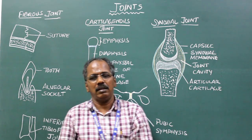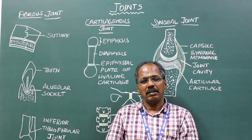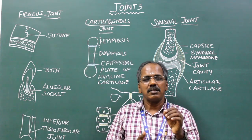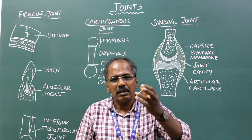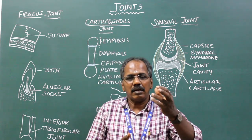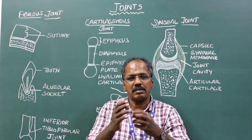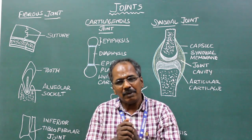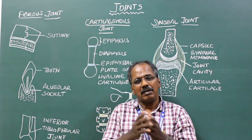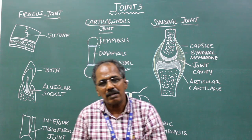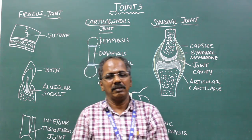Condyloid variety. In this, one of the articular ends is condyloid in shape, which articulates within a concave surface. Examples include the temporomandibular joint and knee joint.